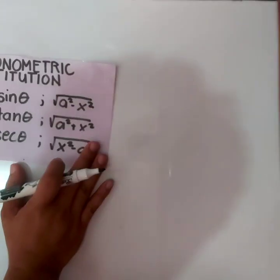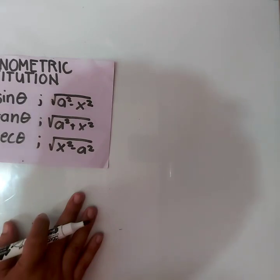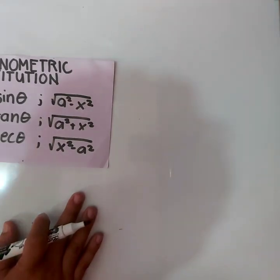Good day everyone. Let us now have the continuation of the lesson about trigonometric substitution. As stated before, integrals involving square roots such as square root of a squared minus x squared, square root of a squared plus x squared, and square root of x squared minus a squared, where a is a constant, can be solved using trigonometric substitution.